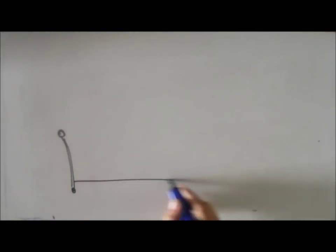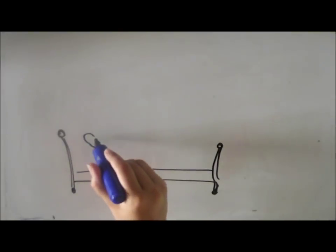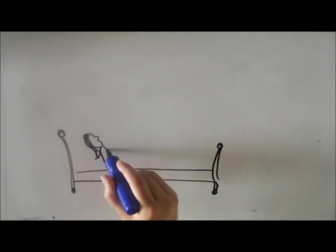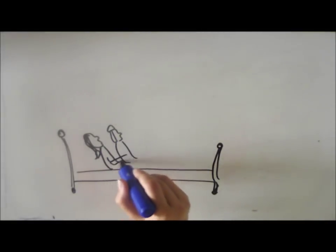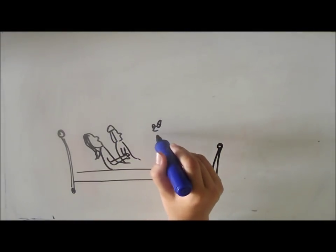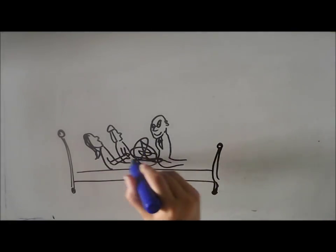Every month when Offred is at the right part of her menstrual cycle, she is required to have impersonal, wordless sex with the Commander. However, when this is taking place, Serena is required to sit behind her, holding her hands. And there isn't a lot of talking or eye contact and it's a bit awkward and it's quite hard to draw.